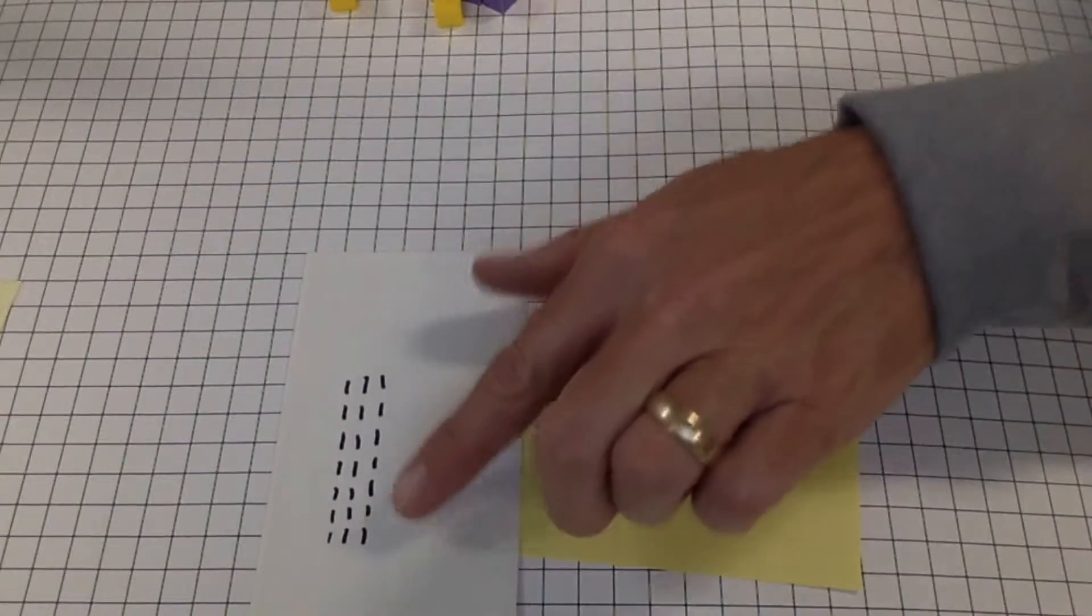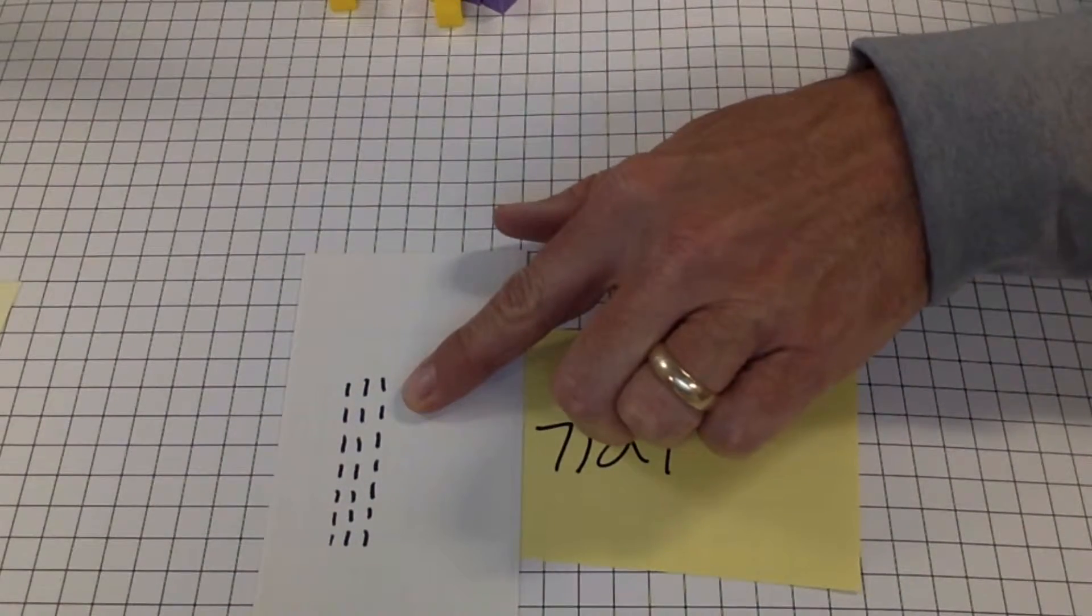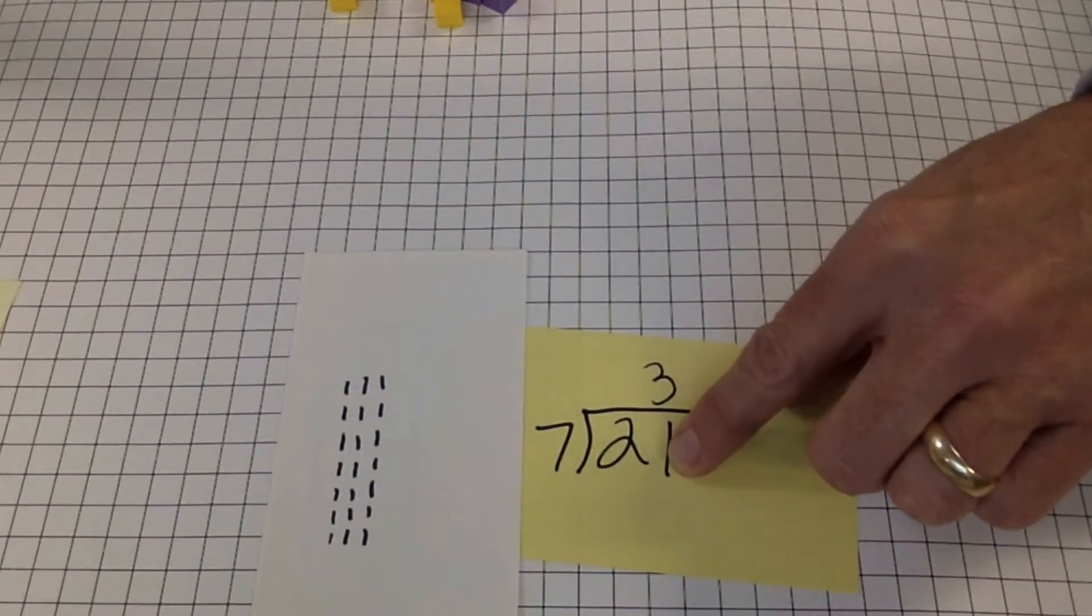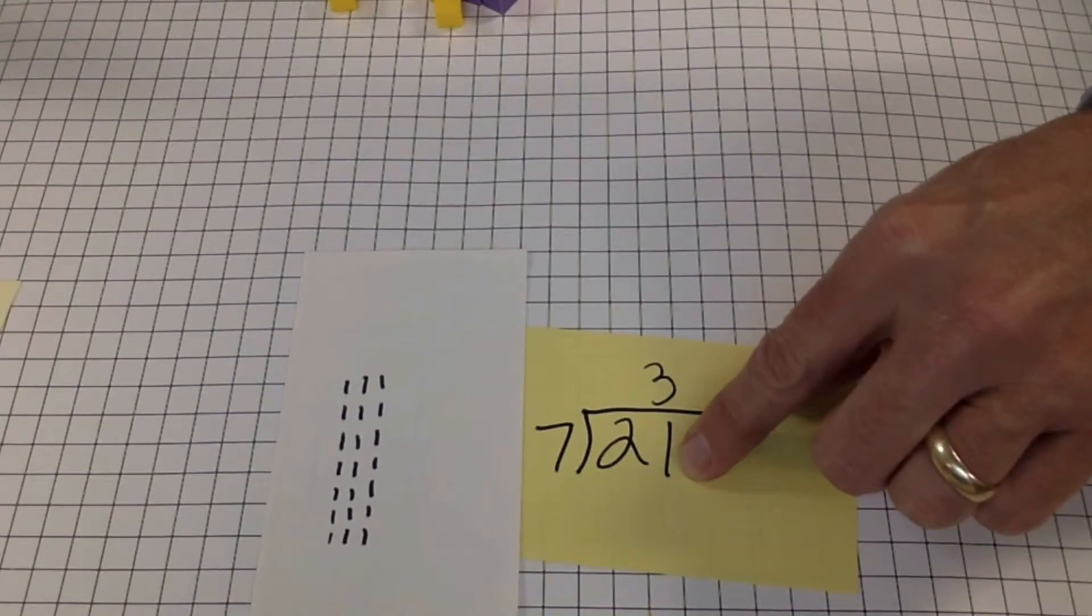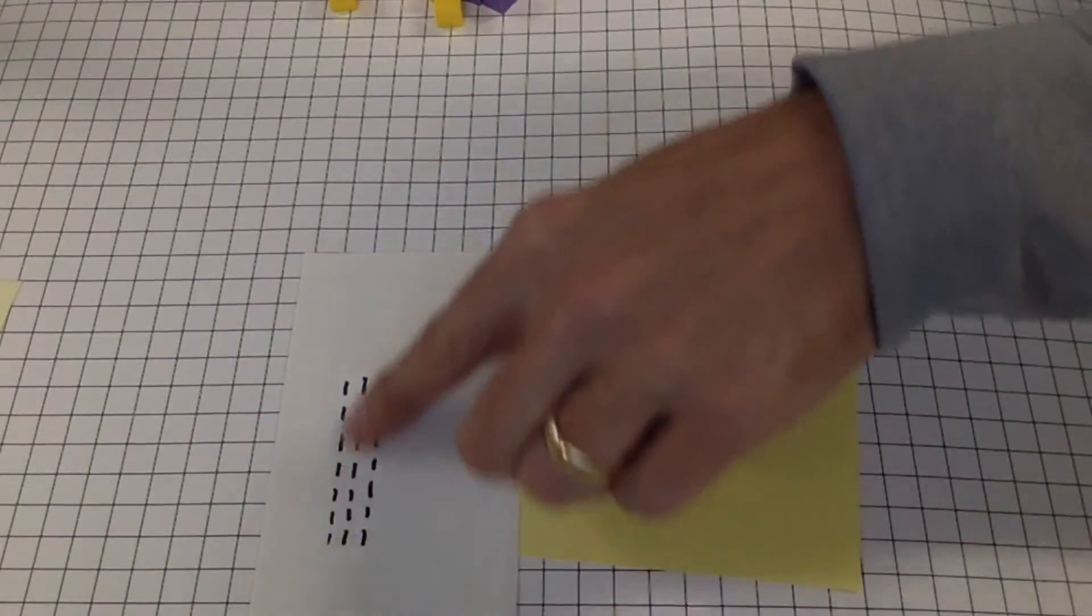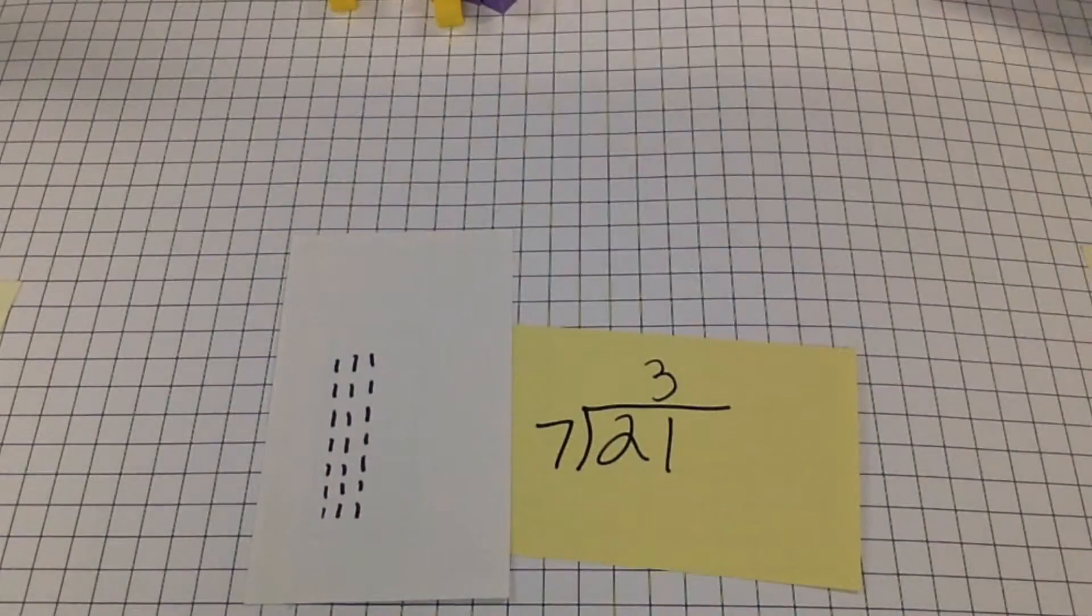And until you have some of these math facts memorized, this is going to be the fastest way to go about it. Just take the total number, your dividend, put it in rows of your divisor, 7, and then count the number of columns that you make to get your quotient when you're finished.